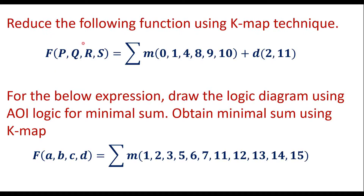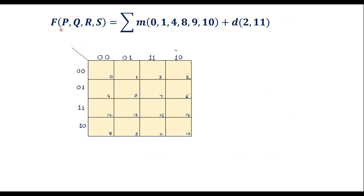Let me consider the first one. Given f of PQRS is summation M — those are the minterms. These are the cell numbers where we are supposed to use 1. And 2 and 11 are the don't cares where we are supposed to use a cross mark.